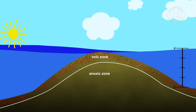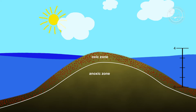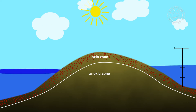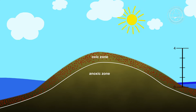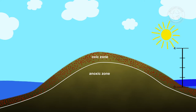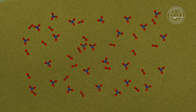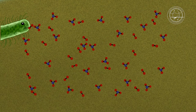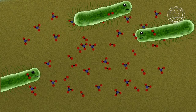We are particularly interested in the transition from the oxic zone, where oxygen is present, to the anoxic zone, where all the oxygen is used up. Organisms that breathe oxygen, just like we do, live in the oxic zone.